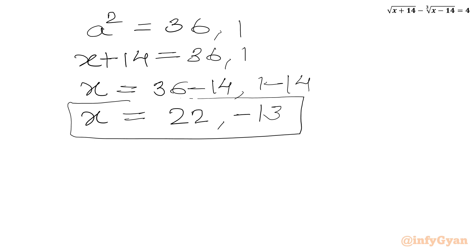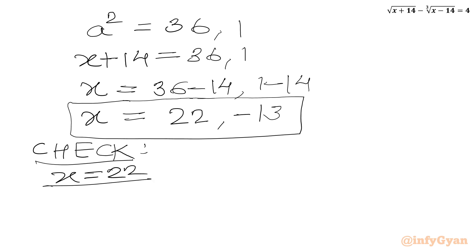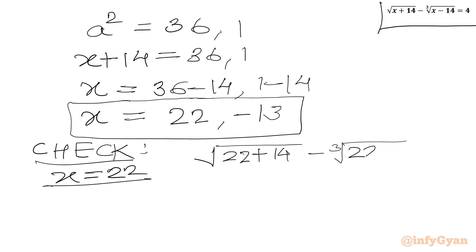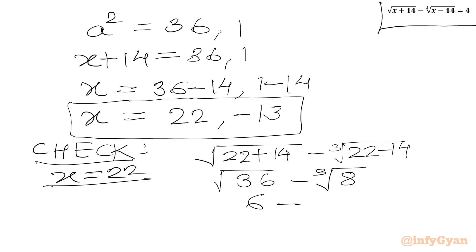Now we will check whether these solutions satisfy the original equation. For x = 22: square root of (22 + 14) minus cube root of (22 - 14) = square root of 36 minus cube root of 8 = 6 minus 2 = 4, which equals our RHS. Hence, x = 22 is verified.